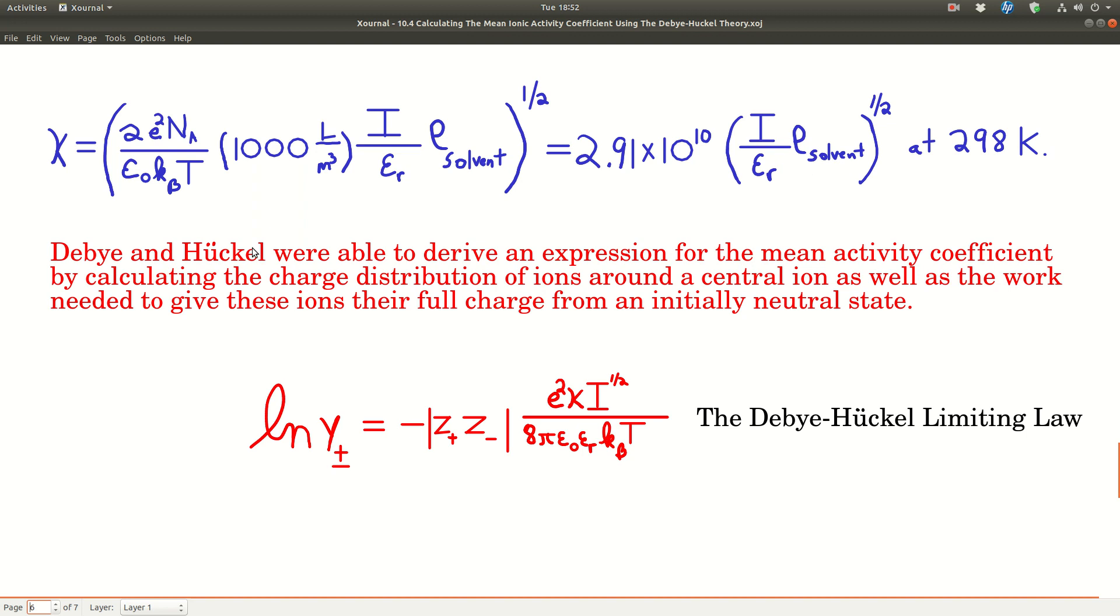It can be shown that Debye and Huckel derived an expression for the mean activity coefficient. This was the point of this whole section. They calculated the charge distribution of ions about a central ion and the work needed to give these ions their full charge from an initially neutral state. Their result is called the Debye-Huckel limiting law.